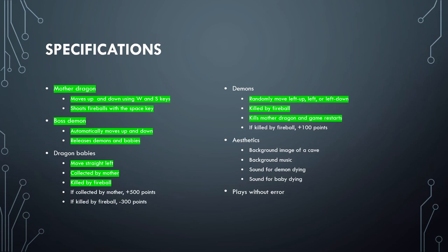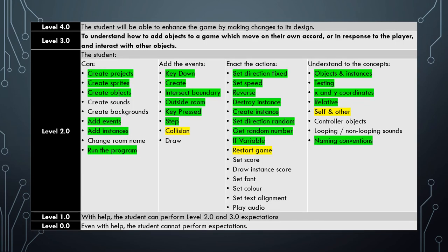We're getting pretty close to the end now, and we have a game where the babies and the demons, when they collide with the mother dragon, act appropriately. To complete this tutorial you've had to learn how to use the collision event, and looked at actions like restart game, and also understand the concept of self and other in relation to instances.